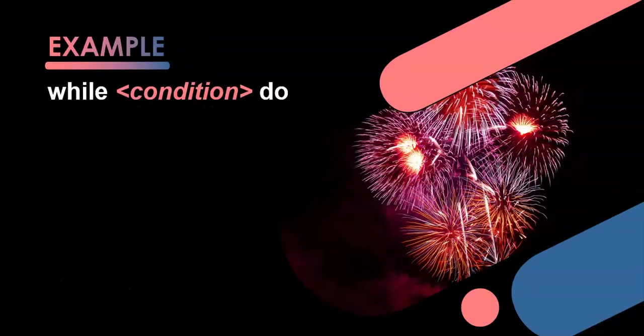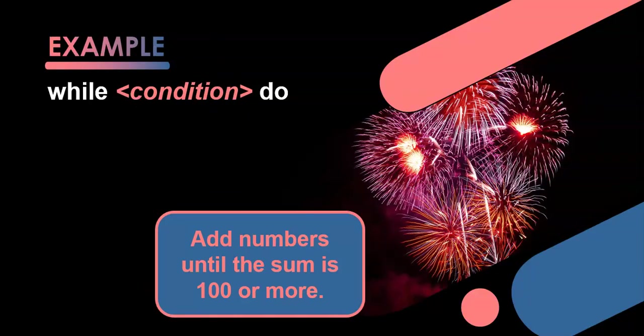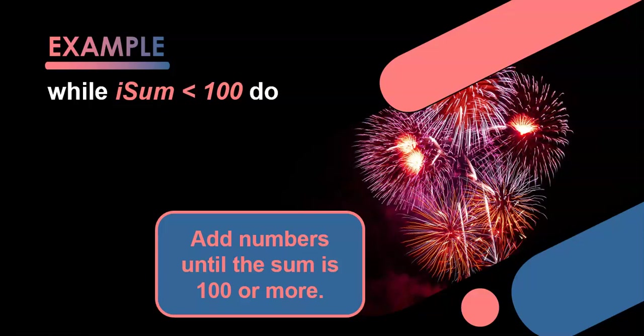Let's do an example with a while loop. We want to add numbers until the sum is 100 or more. While the sum is less than 100, keep looping — we keep adding numbers. When our sum equals 100 or exceeds 100, then we stop. So the condition for the while loop is: while iSum is less than 100, keep doing the loop.